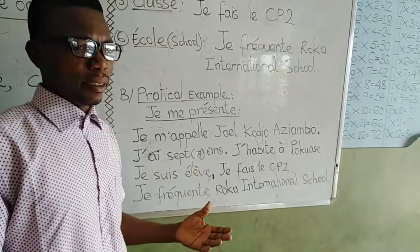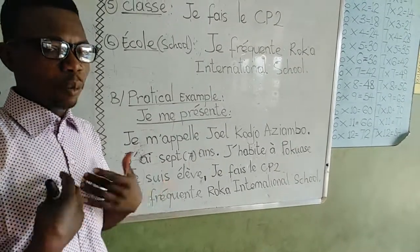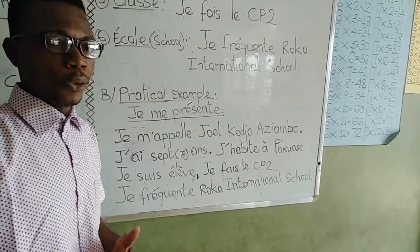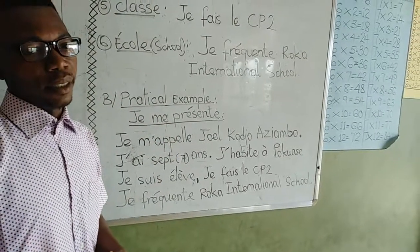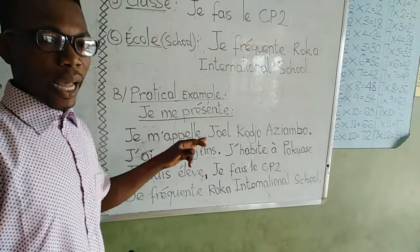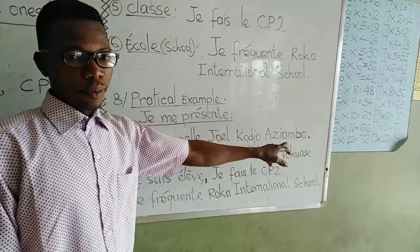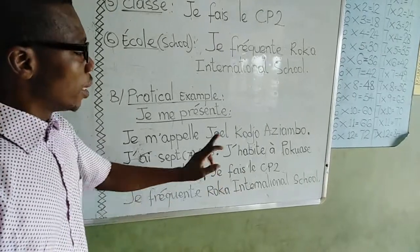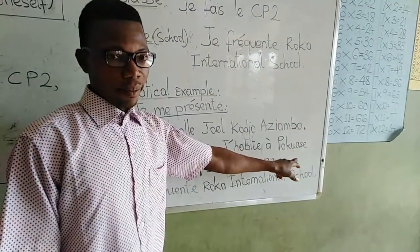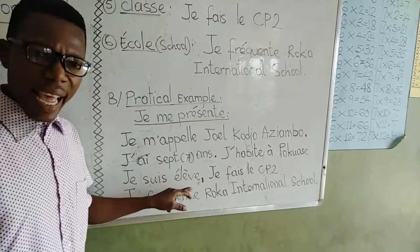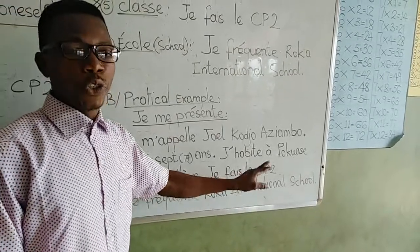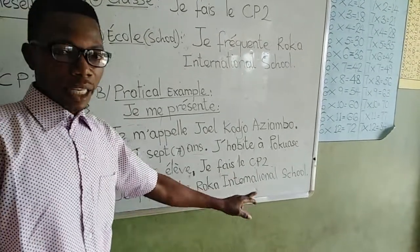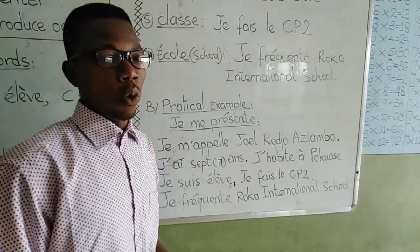I'm just taking the age of seven — not my actual data. My name is Joel Kodjo Asyamu, I am seven years old, I stay at Coquiasi, and I attend Roca School. Here is the full introduction: Je me présente. Je m'appelle Joel Kodjo Asyamu. J'ai sept ans. J'habite à Coquiasi. Je suis élève. Je fais le CP2. Je fréquente Roca International School.